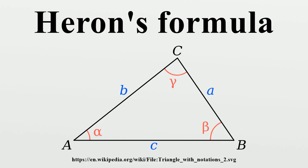A modern proof, which uses algebra and is quite unlike the one provided by Heron, follows. Let a, b, c be the sides of the triangle and alpha, beta, gamma the angles opposite those sides. We have by the law of cosines.